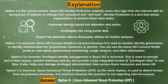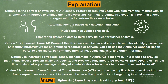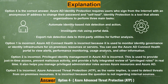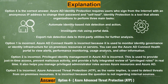Identity Protection is a tool that allows organizations to perform three main tasks: automate identity-based risk detection and action; investigate risk using portal data; and export risk detection data to third-party utilities for further analysis. Option 1 is incorrect. Azure AD Connect Health is used to monitor identity governance or identity infrastructure for on-premises resources or servers. You can use the Azure AD Connect Health portal to view alerts, performance monitoring, usage analysis, and other information.